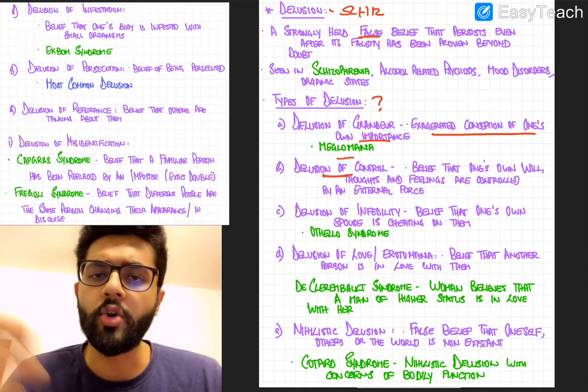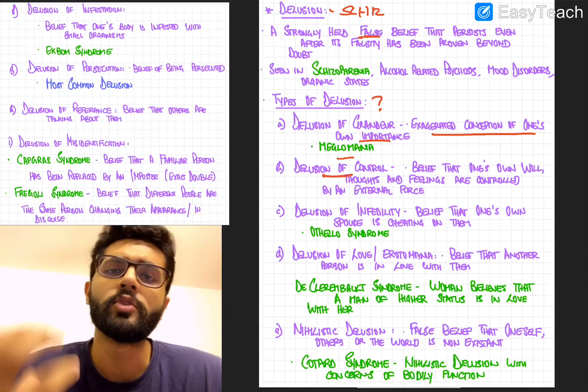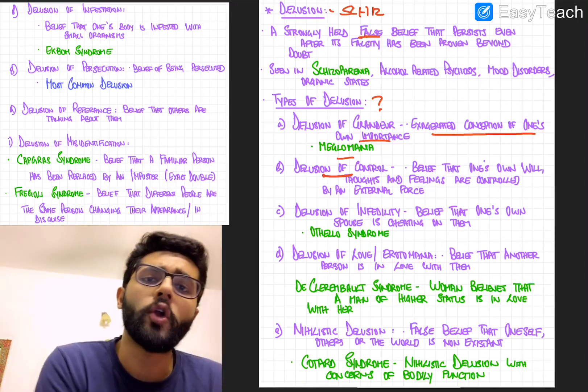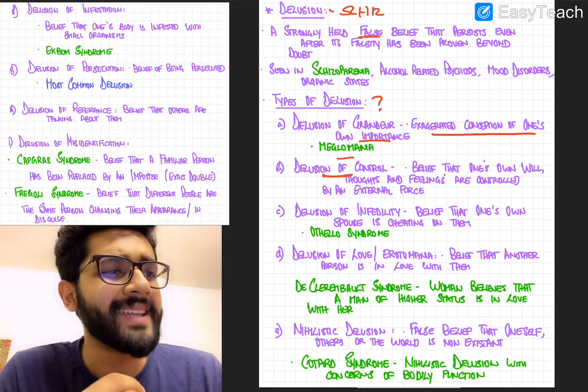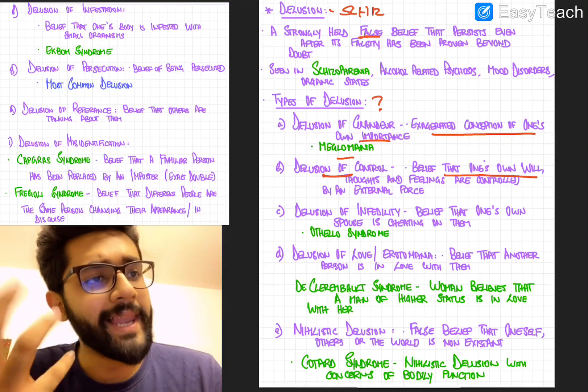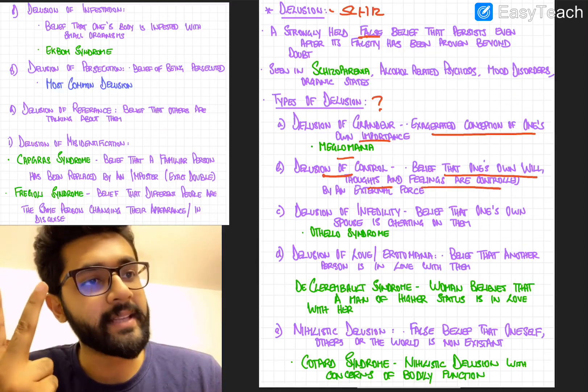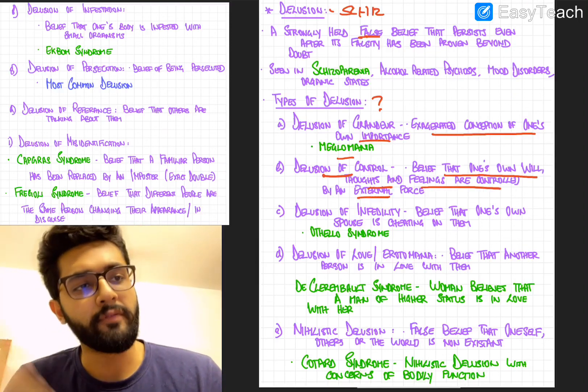Next, you have delusion of control, which is nothing but a false belief in which the individual feels they are under the control of some other external force. So it is a belief that one's own will, thoughts and feelings are controlled by some external force.